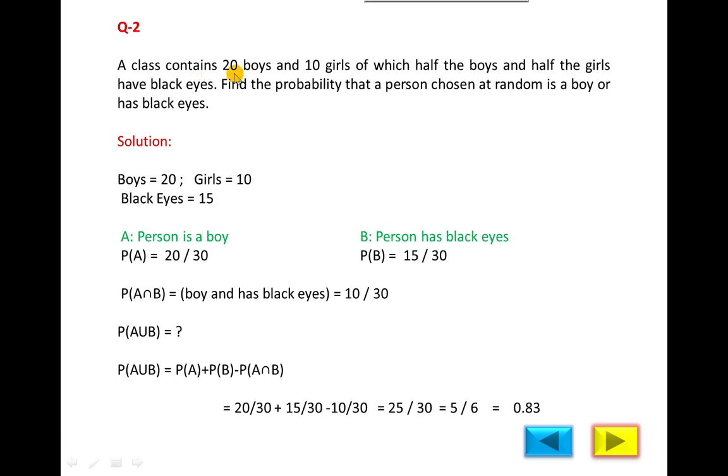A class contains 20 boys and 10 girls, of which half the boys and half the girls have black eyes. Find the probability that a person chosen at random is a boy or has black eyes. In this question the possible outcomes and favorable outcomes are given. Possible outcomes means total number of outcomes are 20 plus 10, which equals 30.